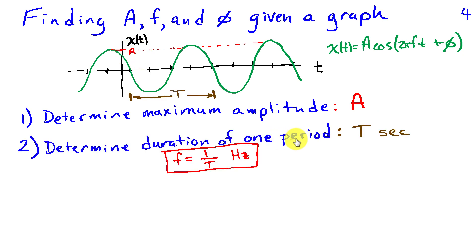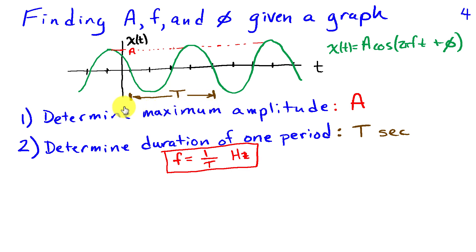Next, determine the duration of one period. You can measure from maximum to maximum, or from one zero crossing to the second zero crossing after it — the latter is sometimes easier because zero crossings have a steeper slope, giving more precision. We call this capital T, the period, and the frequency F is the inverse of that fundamental period.